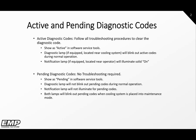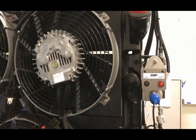Both lamps will blink out pending codes when the cooling system is in maintenance mode. To enter and exit maintenance mode, you simply have to push the reverse button four times in rapid succession. It will then enter maintenance mode. If there are any active diagnostic codes, it will blink them out and you can count the blink lights to determine what the active codes are.